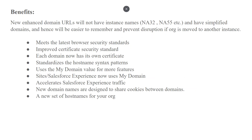There are a lot of benefits. New enhanced domain URLs will not have instance names like NA32, NA52, etc., and have simplified domains — hence will be easier to remember and prevent disruption if a log is moved to another instance. Other benefits include: meeting the latest browser security standards, improving certificate security standards where each domain now has its own certificate, standardizing the hostname syntax pattern, using My Domain value for more features, accelerating Salesforce Experience traffic, and new domain names are designed to share cookies between domains.